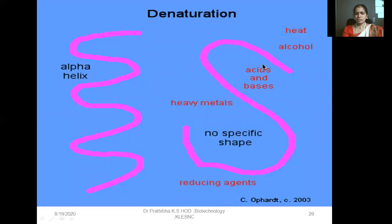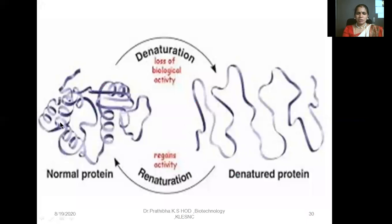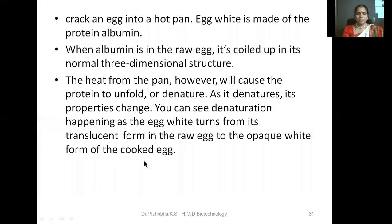Here you can also see this is the normal protein where foldings and refoldings can be observed. After treatment with a denaturing agent — physical or chemical — there will be a loss of biological activity due to loss of the native configuration or conformation. This is the denatured protein. But some proteins can also be subject to re-naturation — they regain their activity — and that is possible with only certain proteins, but not with all protein molecules.